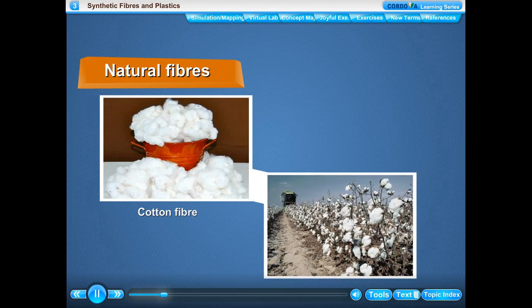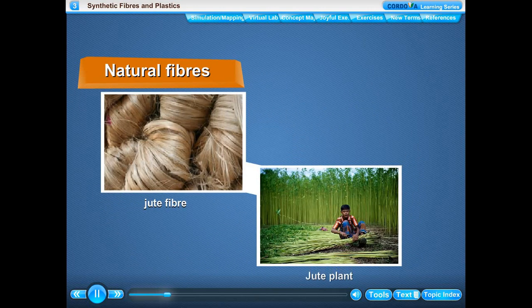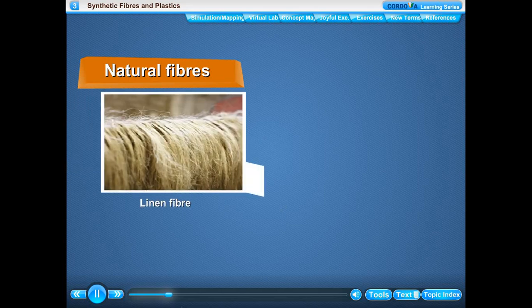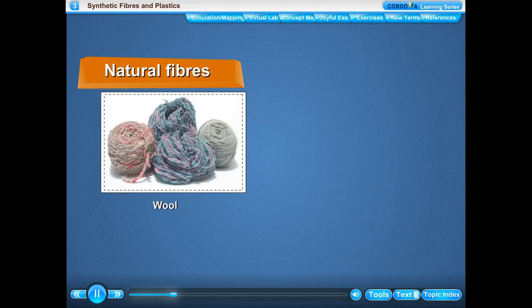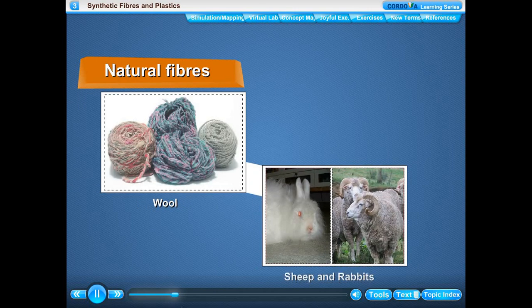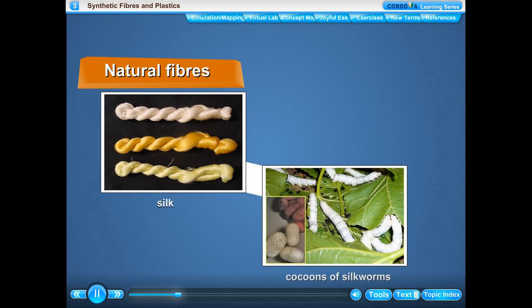Cotton fiber is obtained from the cotton plant, jute fiber from the jute plant, and linen fiber is made from the stalks of the flax plant - these are examples of plant fibers. Wool obtained from sheep and rabbits, and silk obtained from cocoons of silkworms are examples of animal fibers.